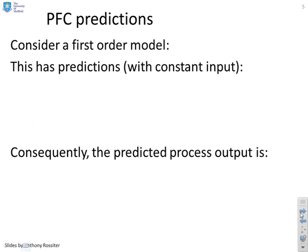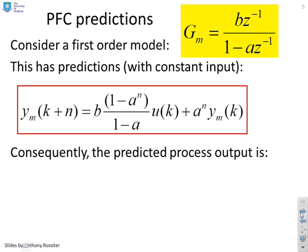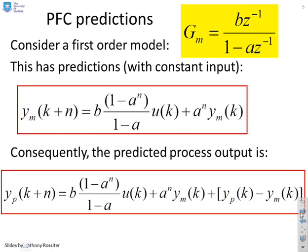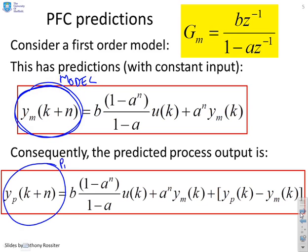For PFC predictions, consider a first order model with predictions assuming a constant input — we've done these predictions many times so we won't dwell on them. The predicted process output is given accordingly. The key difference between the model prediction and the process prediction is just the bias term at the end.